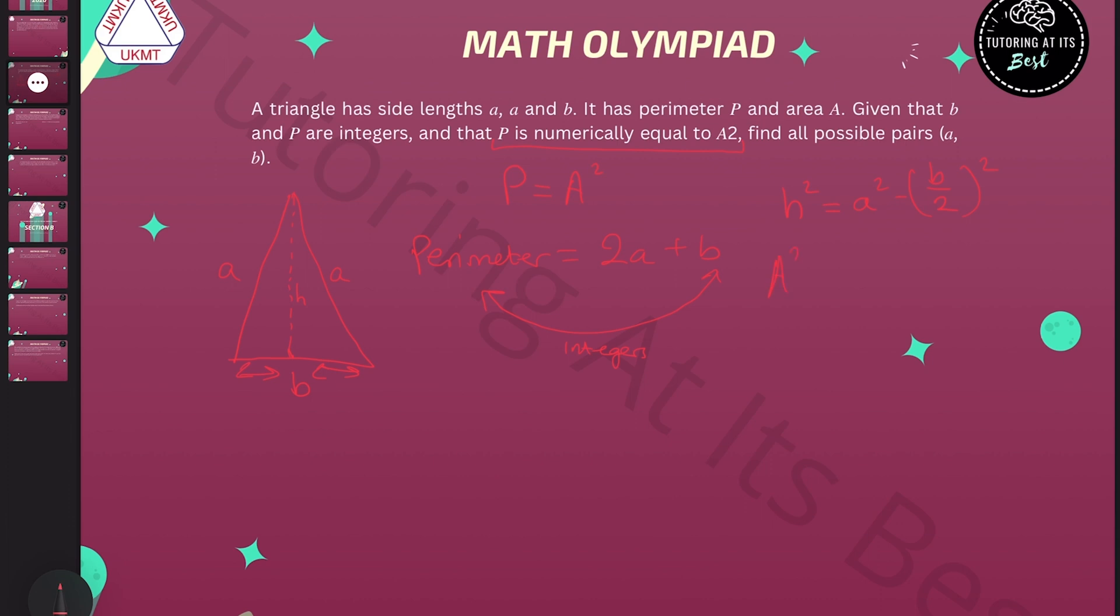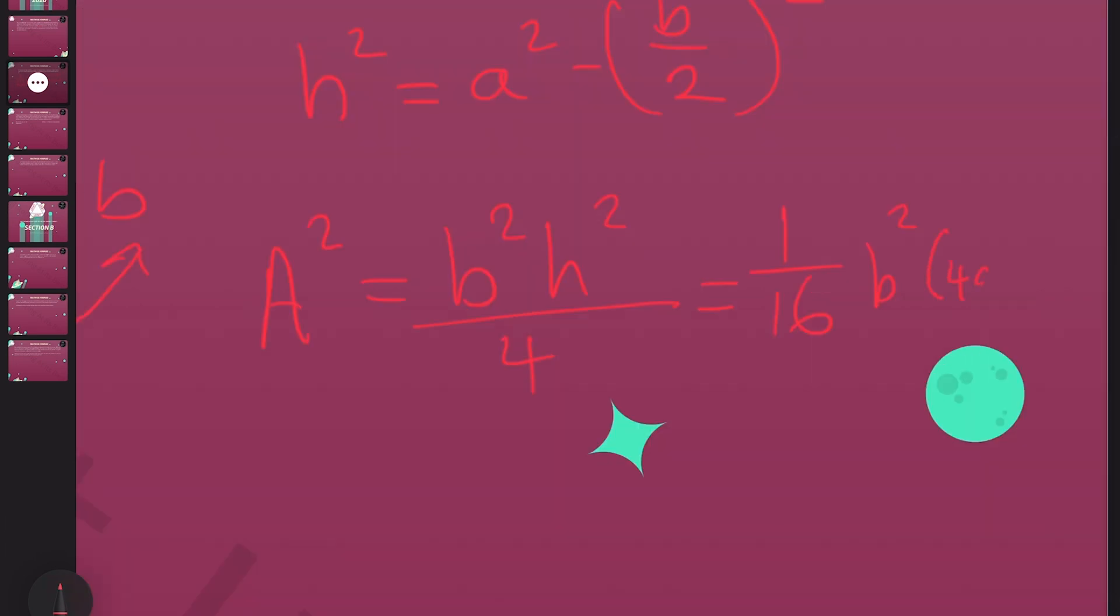If we get the area, we can get A², which equals B² and H² over 4. Now we can look at A². That is going to be B², H² over 4. When we substitute this in and tidy it up, we're going to get 1 over 16, B², times 4A² minus B².